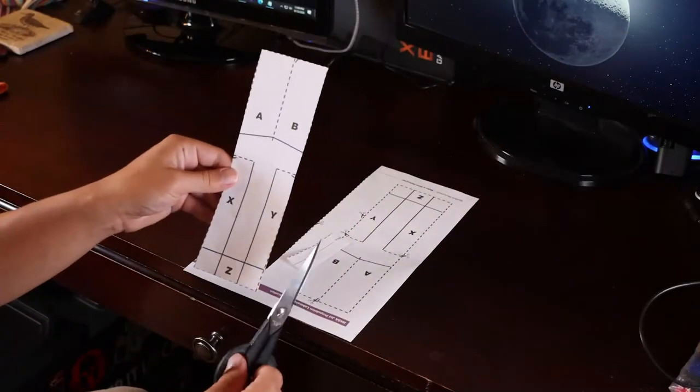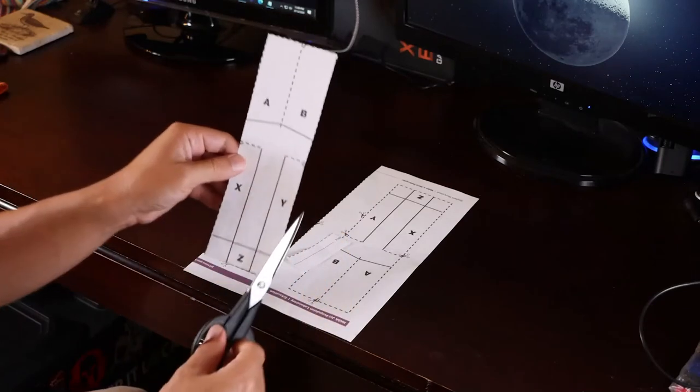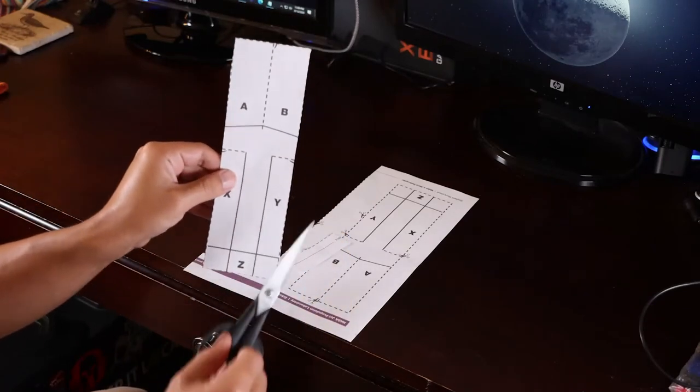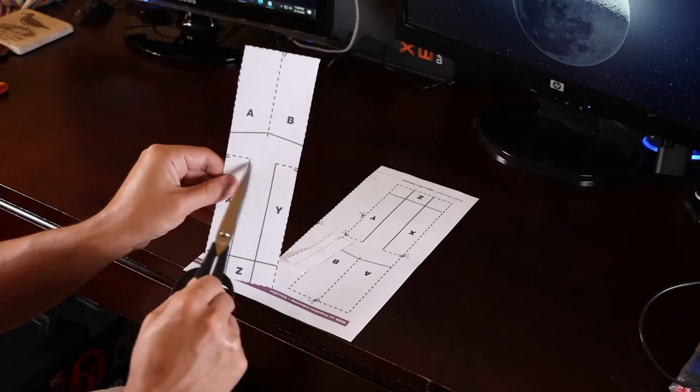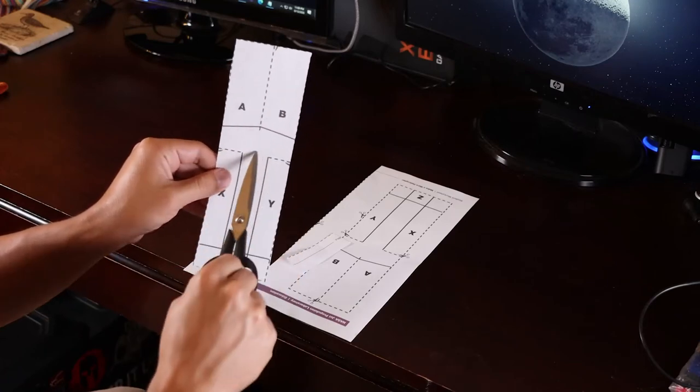Now, once we cut out the main part of this helicopter, just make sure you cut these little dotted line tabs here too, but don't cut all the way in.